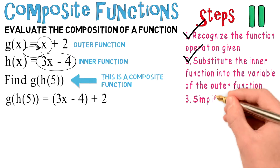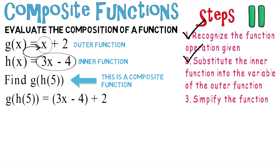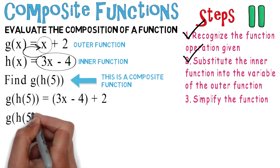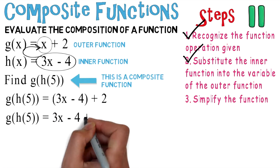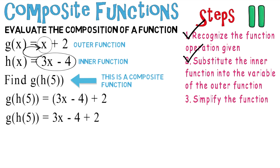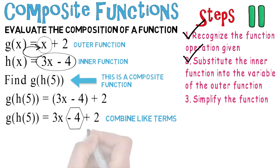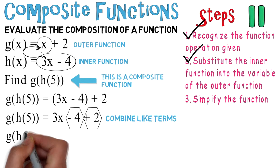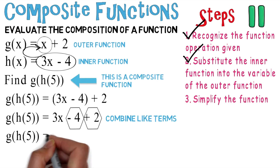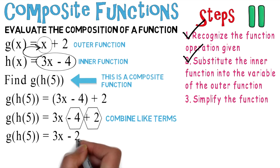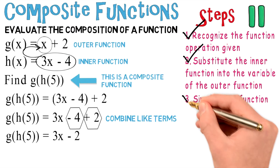Let's move on to the third step, which is to simplify the function. In order to simplify, we wind up getting G of H of 5 equals 3x minus 4 plus 2, because the parentheses have been removed. Next, we would like to combine like terms. Let's identify the constants as like terms — negative 4 and positive 2 are constants, those are like terms. Continuing to simplify: G of H of 5 equals 3x minus 2. Check off that step.